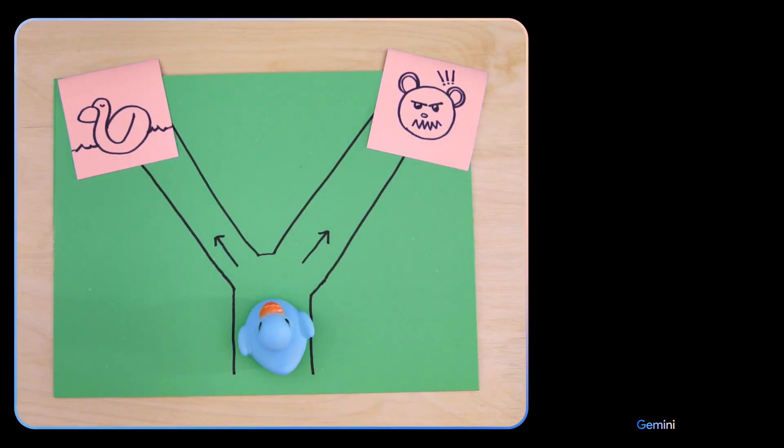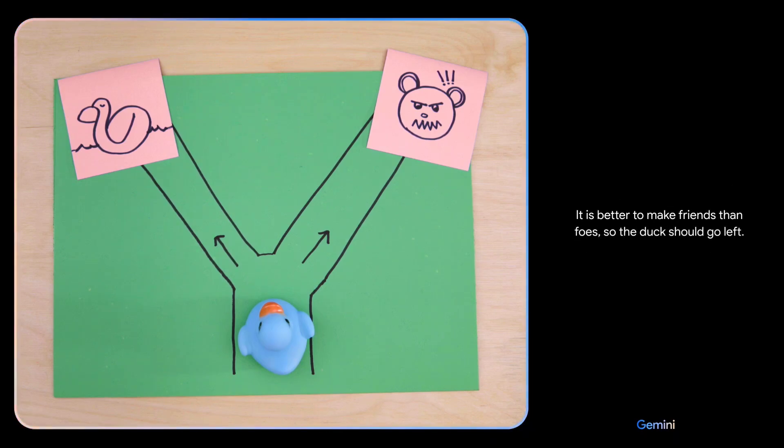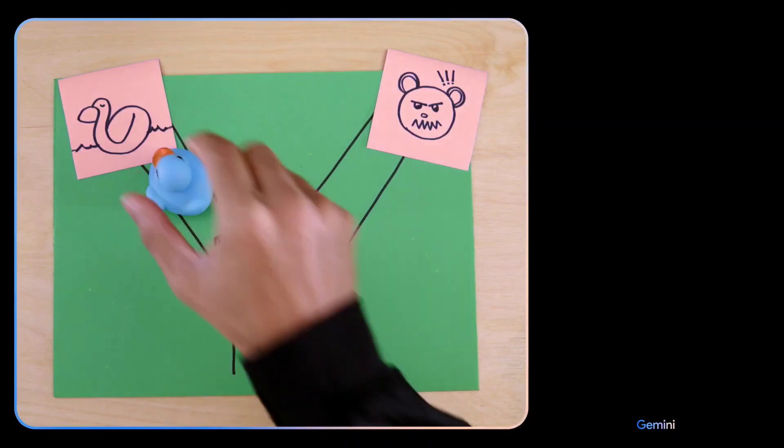Which way should the duck go? Going left leads to a duck which is a friend. Going right leads to a bear which is a foe. It is better to make friends than foes, so the duck should go left. Smart choice.